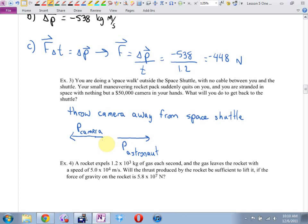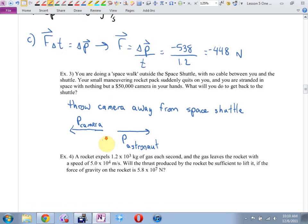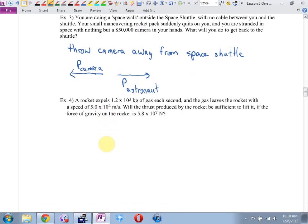That's really how they maneuver in orbit. They use some kind of a rocket system, and the particles going out of the rocket have a negative momentum. Must mean you have a positive momentum in the opposite direction. Oh, like example four. A rocket expels 1.2 times 10 to the third kilograms of gas each second, and the gas leaves the rocket with a speed of that. Will the thrust produced by the rocket be sufficient to lift it if the force of gravity on the rocket is that?